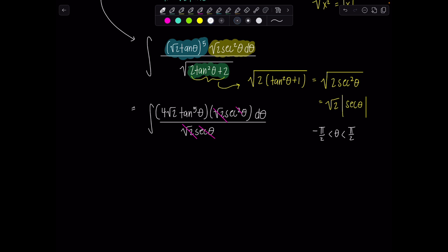So I left this rad 2 because I knew it was going to cancel with the rad 2 down here. And then this secant also cancels with one of the secants up top. So now let's see what we got going on. I'm going to take this constant outside. 4 rad 2, you are exiled outside the integral. Then I have tangent theta to the fifth, secant theta d theta.